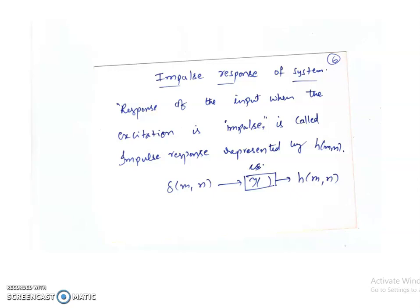The impulse response of a system is the response of the system when the excitation is an impulse. It is represented by h(n), in memory of Heaviside. If I apply delta(n), the output of the system is the impulse response h(n). So h(n) equals the transformation on delta(n).